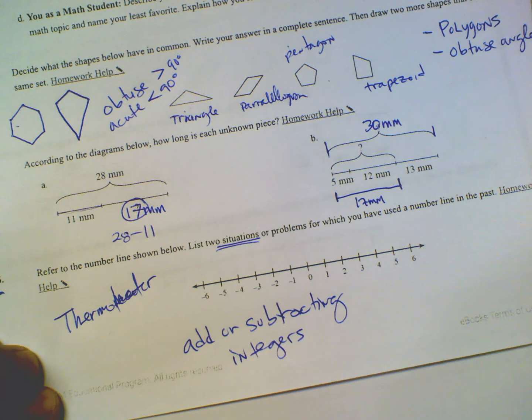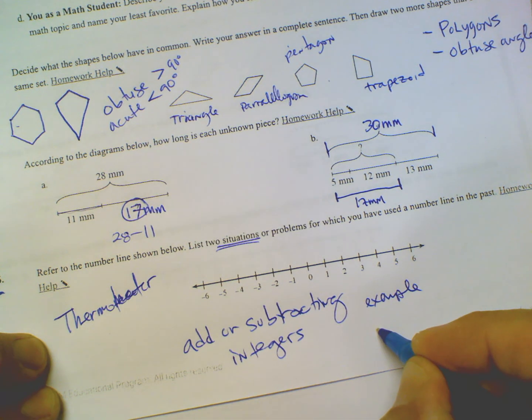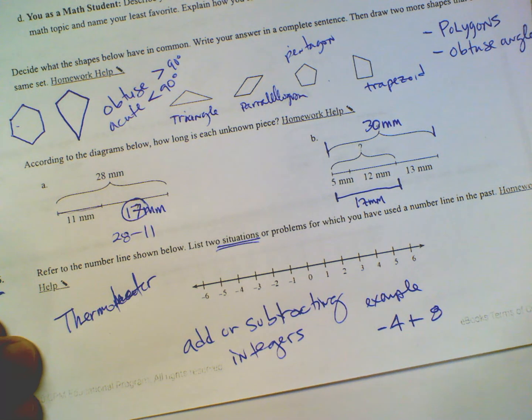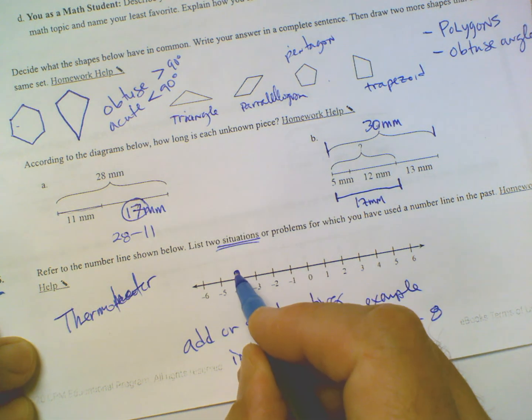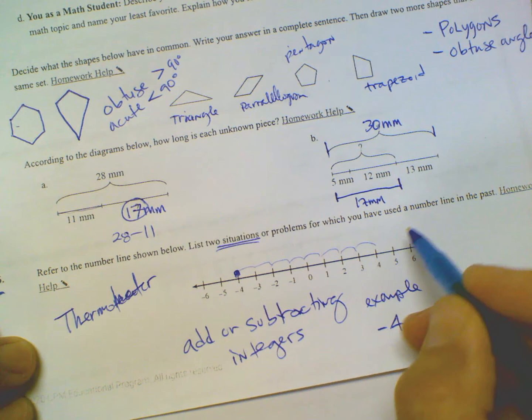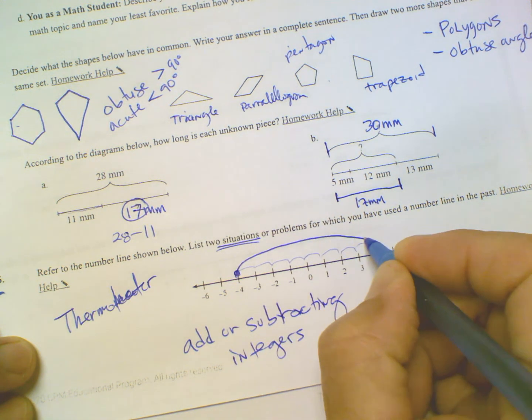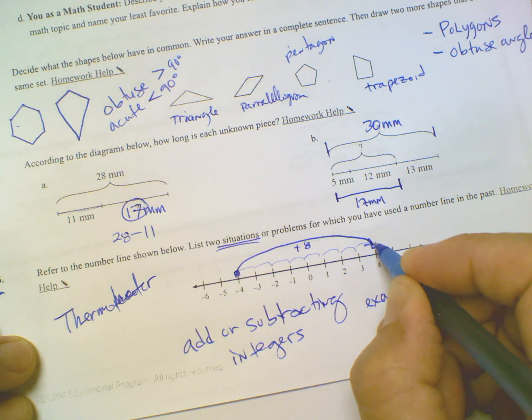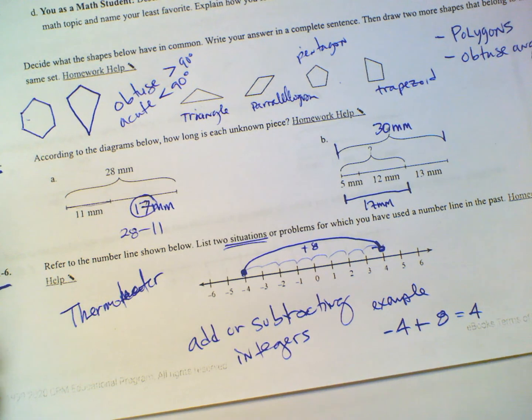So if I have an example: if I want to know what negative 4 plus 8 is, I would start at negative 4 and I would add 8. So I'd go 1, 2, 3, 4, 5, 6, 7, 8. If I then jump all the way here, that would be negative 4 plus 8, and my final answer would be positive 4. So that would be another way of using a number line. Okay guys, there you go.